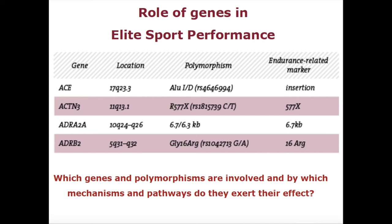So these four are the most important genes. If somebody wants to develop a personalized sports nutrition therapy, these are the four genes they should start with. These are the genetic variations implicated in relation to sports nutrition for people specialized in sports nutrition.